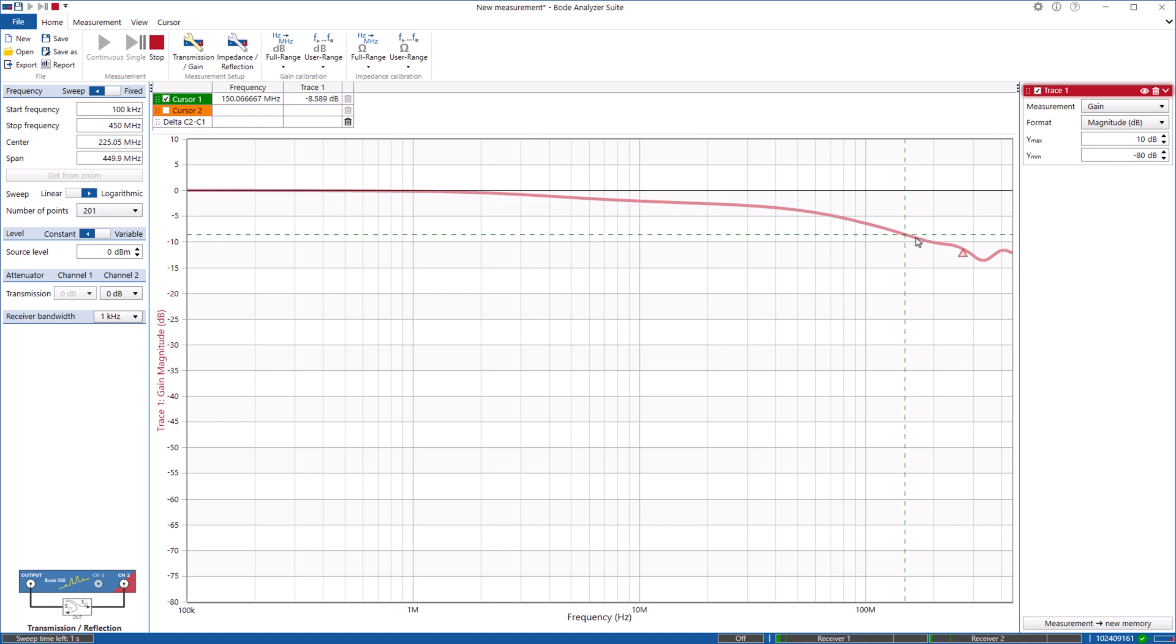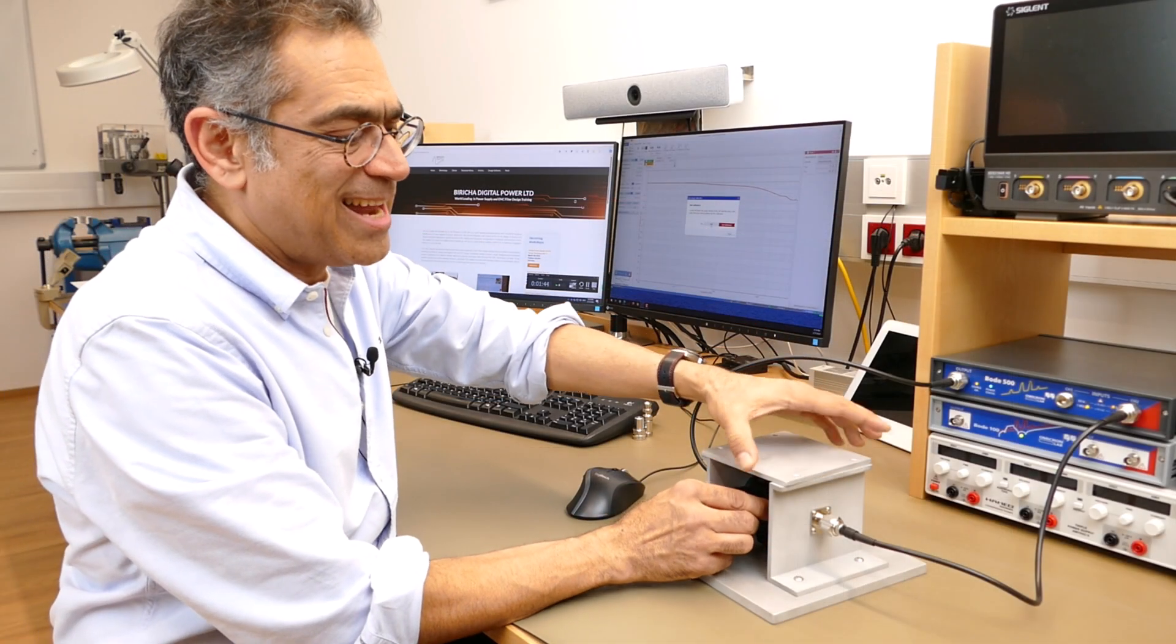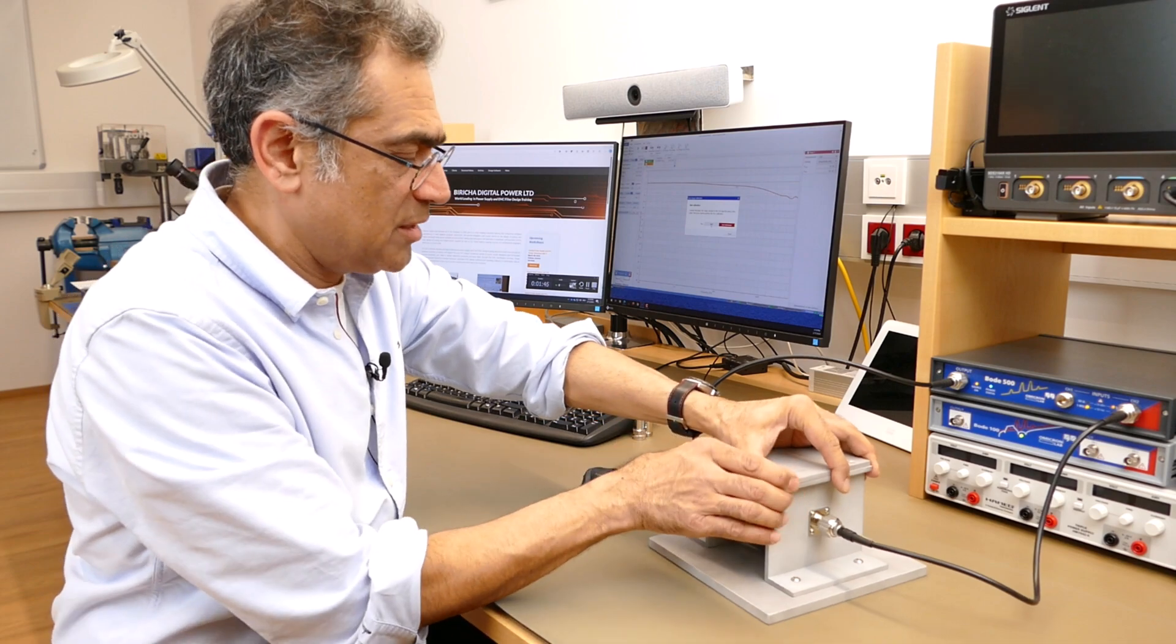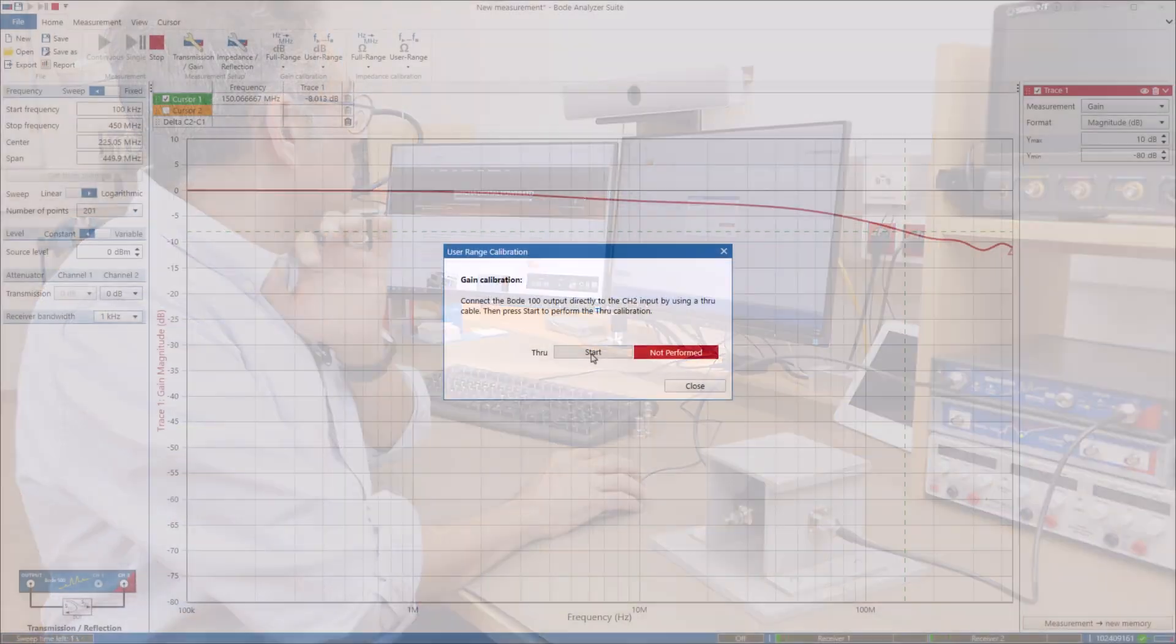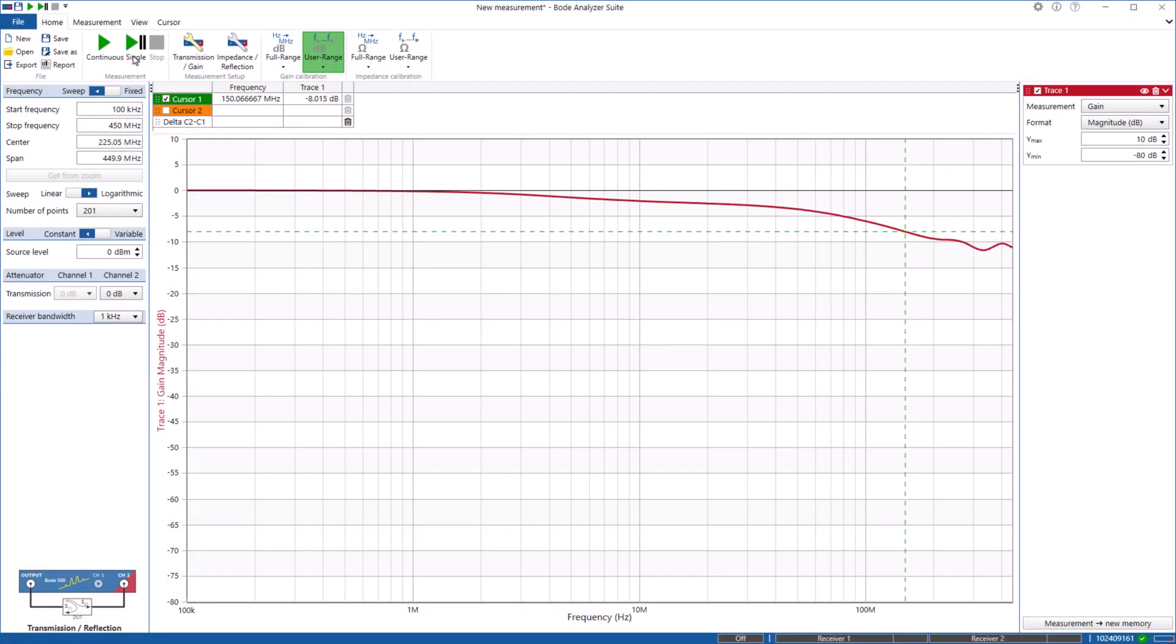So I go here and I go to user range and I will first do a calibration. Let me put this back on - in reality you should screw it back but for this measurement it's okay, we just leave it like so - and we do a calibration. And you will see that the instrument will take into account anomalies and make it a flat line.